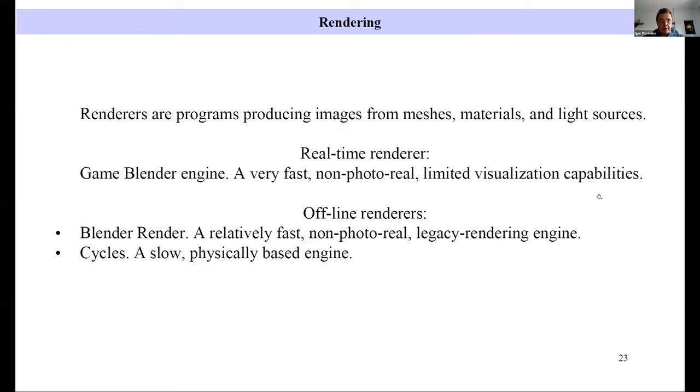Rendering. Renderer sets are programs producing images from mesh materials and light sources. Blender includes two types of renderers: real-time and offline. Real-time is the Blender game engine. It's very fast, non-photo-real and limited visualization capabilities. And offline renderers: Blender render, relatively fast and non-photo-real engine, and Cycles, very slow and physical based engine.